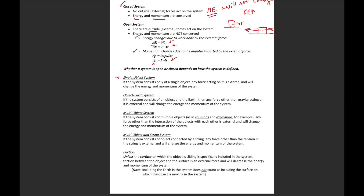For a single object system — the system consists of only a single object — any force that acts externally will change the energy and momentum of the system. That's what we saw in part A of that question. We just had a block. If I draw my boundary around just the block, there was the spring acting from outside and the force of gravity from outside. The object sped up in the direction of motion, so kinetic energy increased, meaning mechanical energy increased.